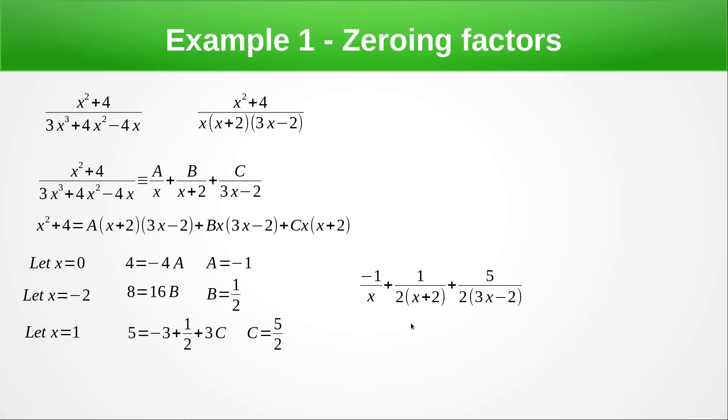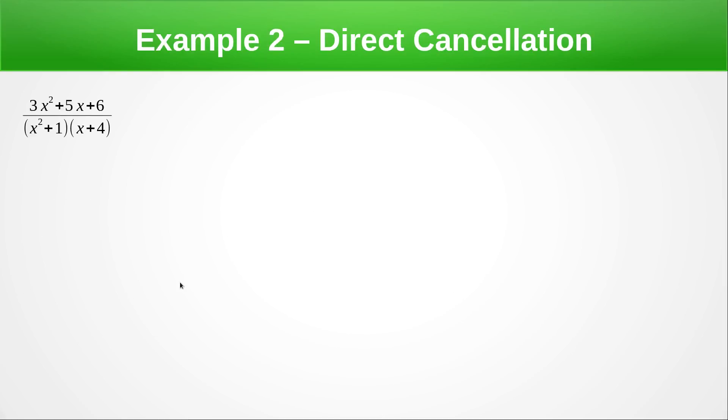So now we're going to look at the example where we actually have some direct cancellation and that's always going to occur when we have a higher order factor. So this is already factorized so we're going to get it in the form (Ax + B)/(x² + 1) because remember this is order 2 so this needs to be order 1 plus C/(x + 4).